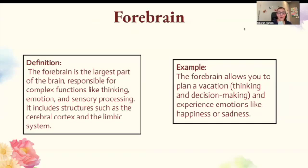Forebrain. The forebrain is the largest part of the brain, responsible for complex functions like thinking, emotion, and sensory processing. It includes structures such as the cerebral cortex and the limbic system. The forebrain allows you to plan a vacation — thinking and making decisions — and experience emotions like happiness or sadness.